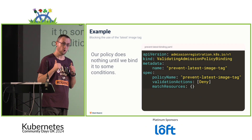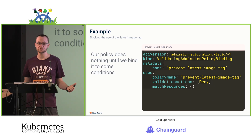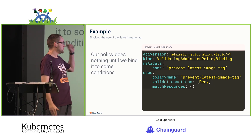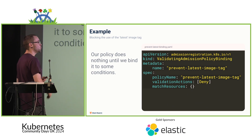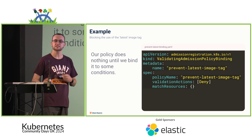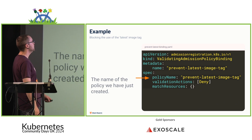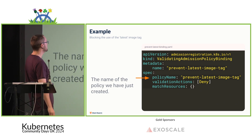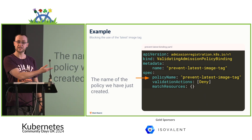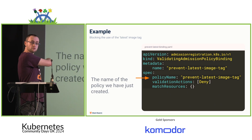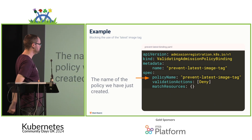So we have a policy that says no containers or init containers in any deployments, daemonsets, or stateful sets can use the latest tag. But right now applying that to our cluster will do nothing — that's where we need an admission policy binding to tell the cluster what to apply that policy to. First, we give the binding the policy name it's associated with: prevent-latest-image-tag.